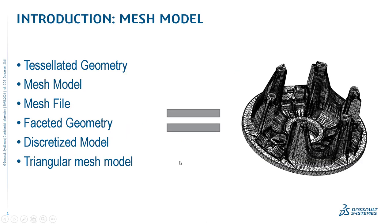It is important to understand what we mean when we say mesh model. When referring to a mesh model, we're referring to a model whose boundary representation is defined by a bunch of mesh facets — in this case, triangular facets. On this slide, you can see many synonyms for a mesh model: tessellated geometry, mesh model, mesh file, facet geometry, discretized model, triangular mesh model, and even polygonal model.